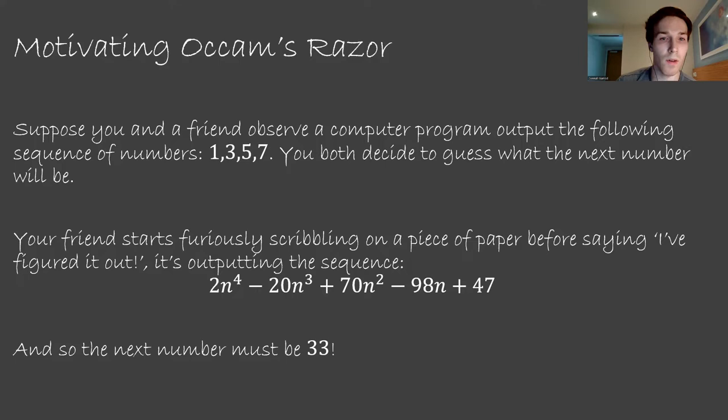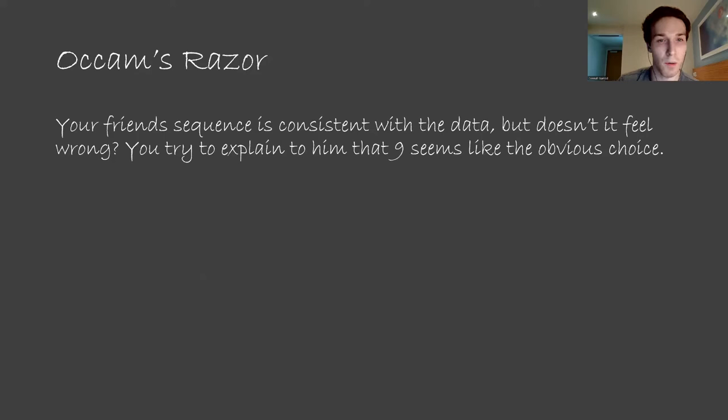You're dubious of this and confused why he thinks this is a good hypothesis. You calmly say to your friend, doesn't nine seem like an obvious choice? 1, 3, 5, and 7 are the first four odd numbers, so why wouldn't the answer be the fifth odd number?